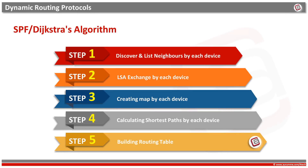Link state routing protocols use SPF, or Dijkstra's algorithm, for best path selection. This algorithm works in five steps. In the first step, each device looks around it on all of its interfaces and makes a list of its neighbors.